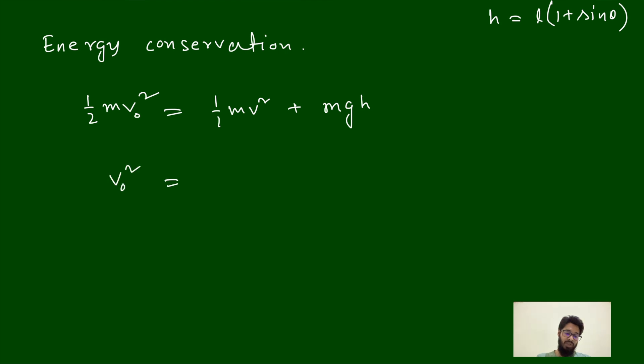v0 square is equal to v square plus 2gL(1 plus sin theta).